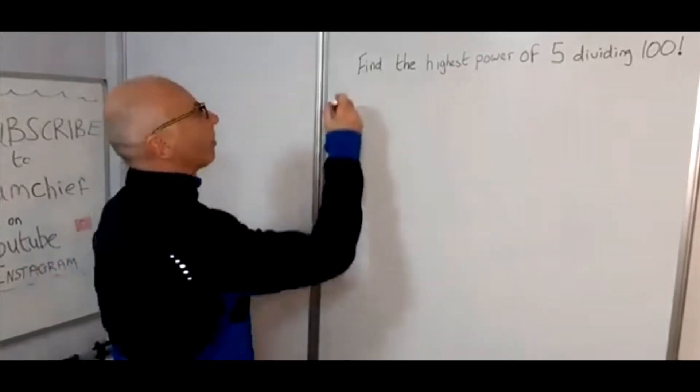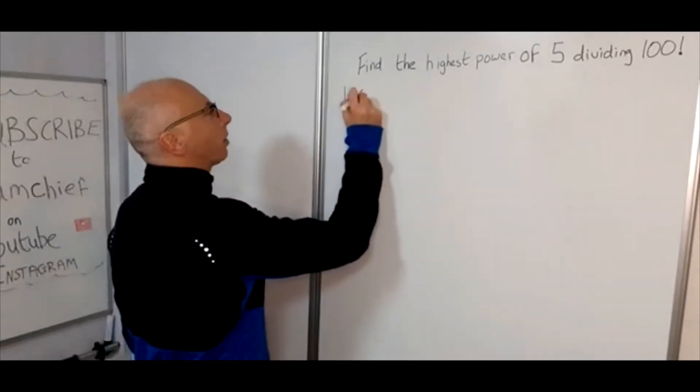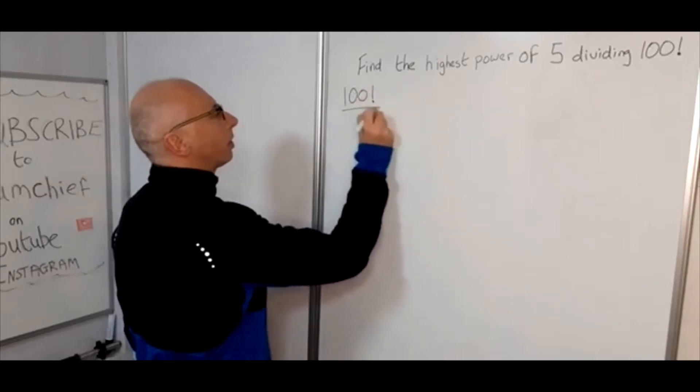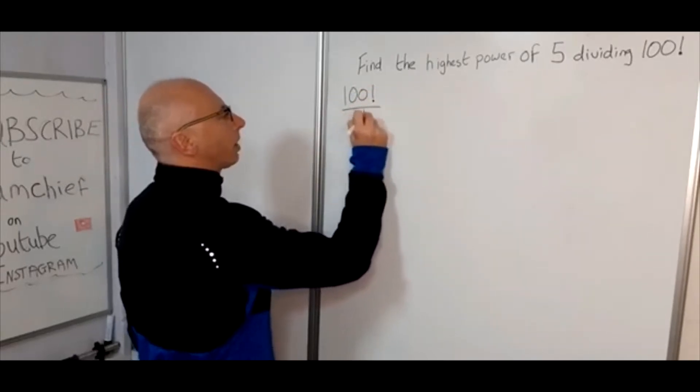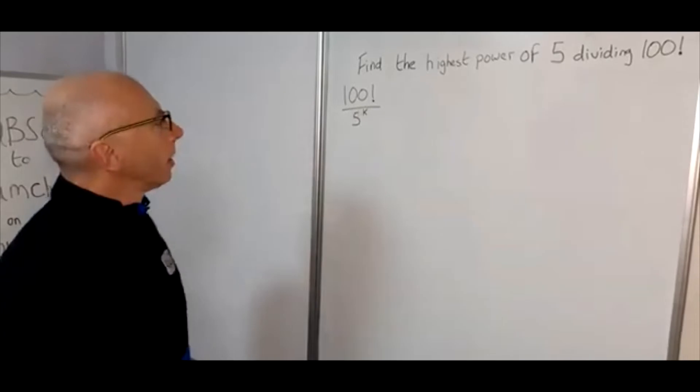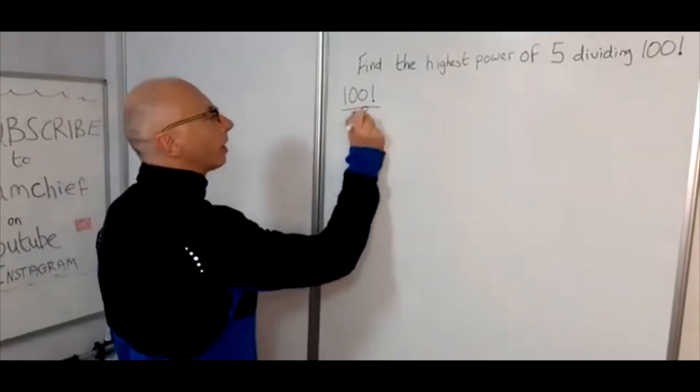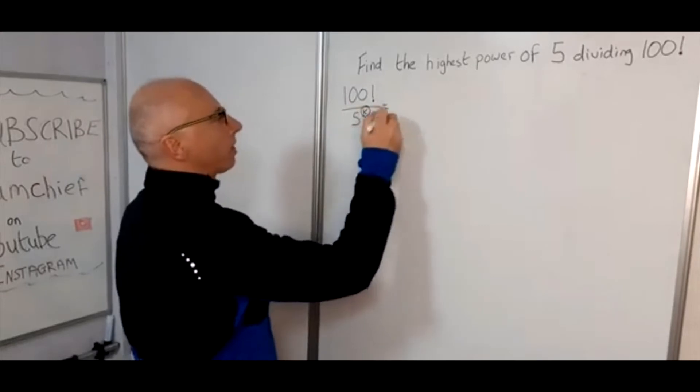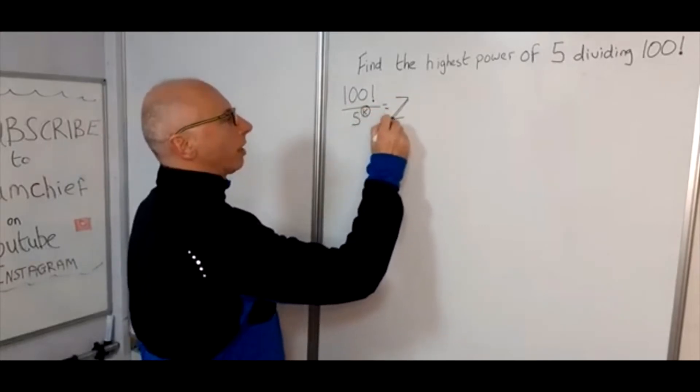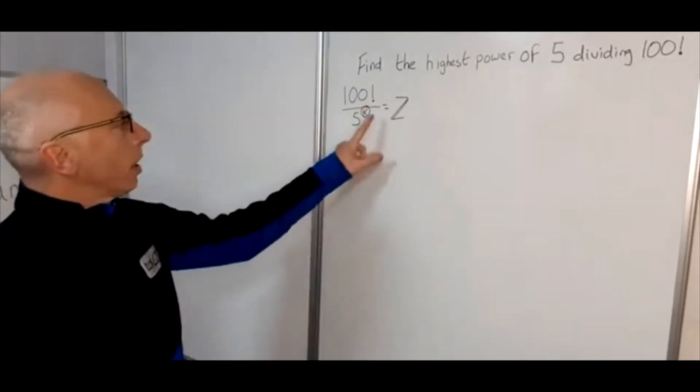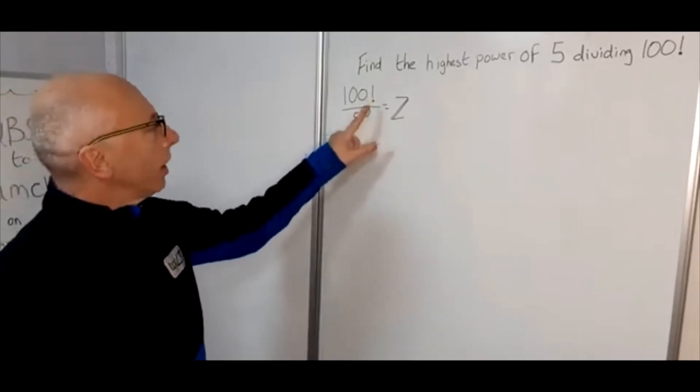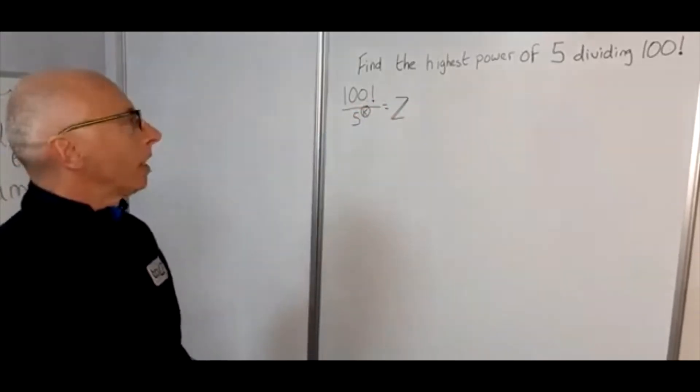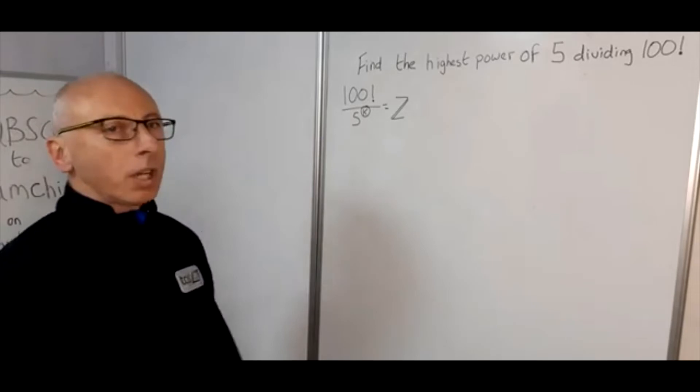So basically what we're looking for is 100 factorial divided by 5 to the power of k. What we're looking for is the integer k. When we divide this we must get an integer as well, so k must be an integer and the answer must be an integer. So how are we going to go about finding that?